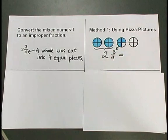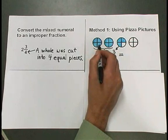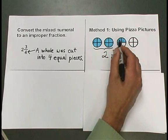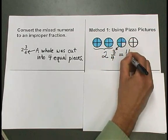To convert this to an improper fraction, we want to count the total number of pieces involved. That's 1, 2, 3, 4 from one whole, 5, 6, 7, 8 from another whole, 9, 10, 11. Eleven pieces were shaded.